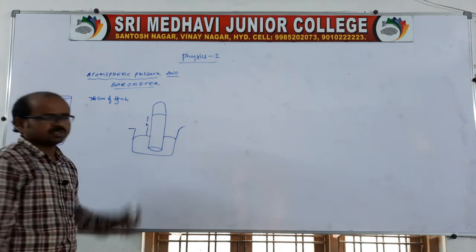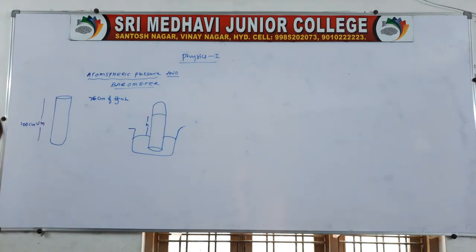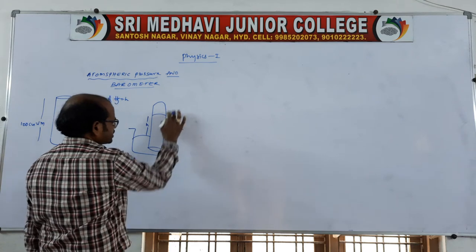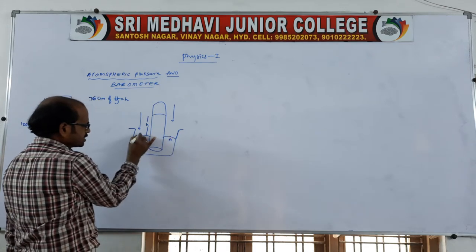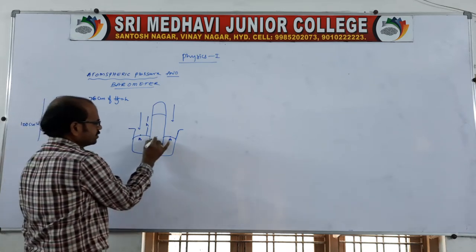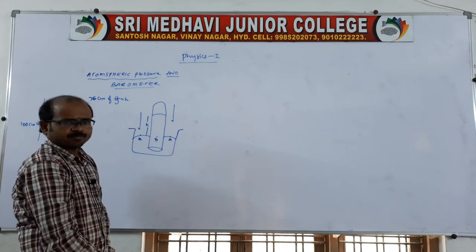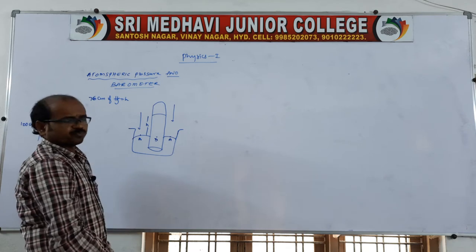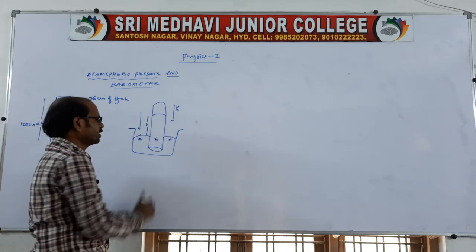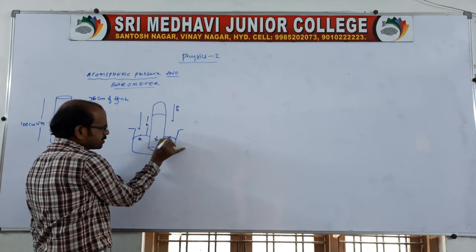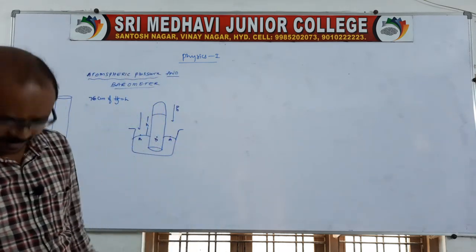The mercury falls down into the beaker. Now let us find the atmospheric pressure (ATM). In the open area, pressure is acting on the mercury column. We label points: a, b, and d. According to Pascal's law, since the liquid is static, the pressure p-naught acting at the open surface is distributed equally in all directions throughout the mercury. Levels at points a, b, and d are the same, so pressure at all these points is equal.